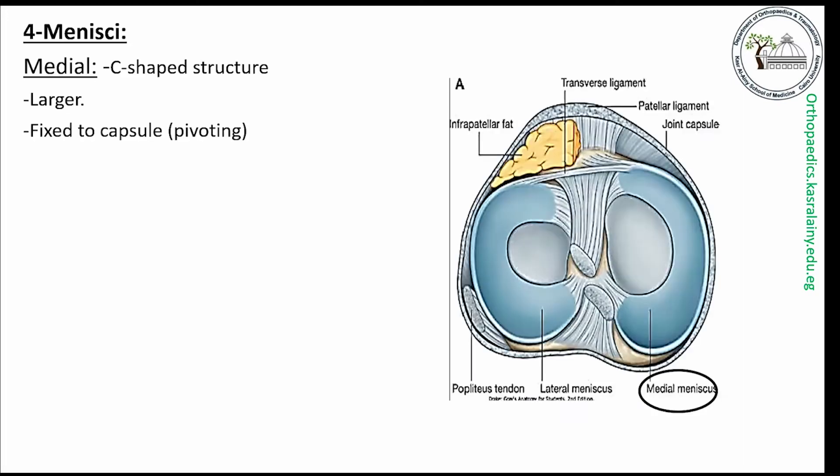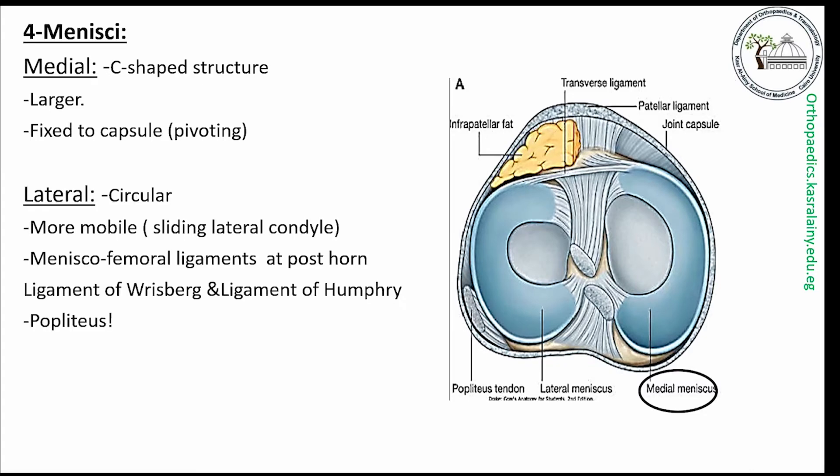The menisci also contribute to the kinematics of the knee. The medial meniscus is C-shaped and larger, fixed to the capsule, allowing for the pivoting function of the medial side. While the lateral meniscus is circular.